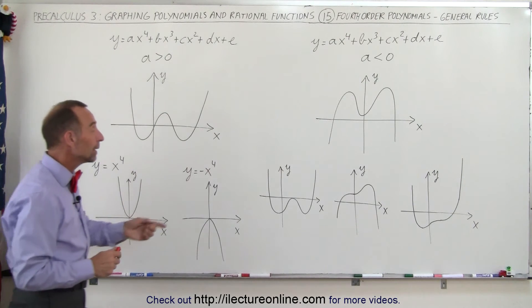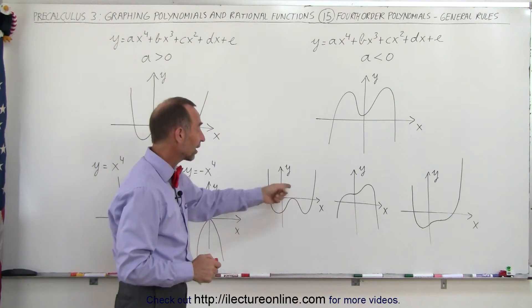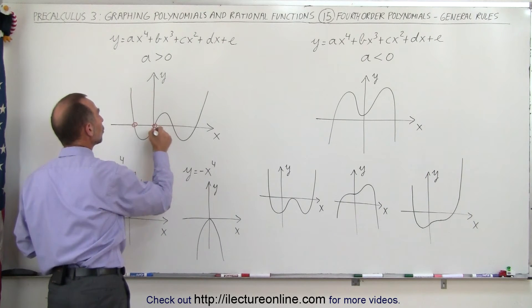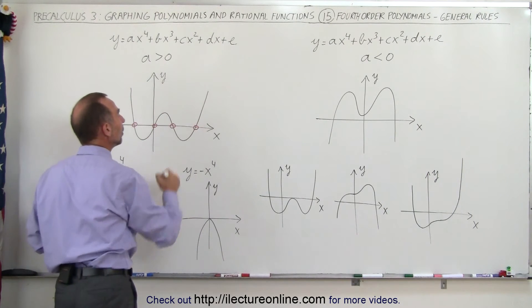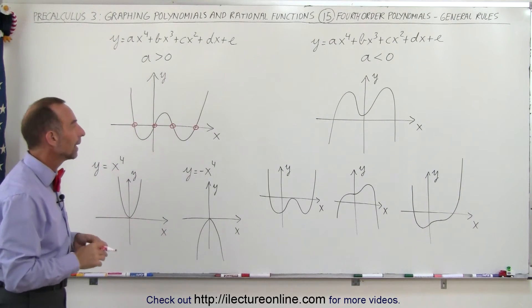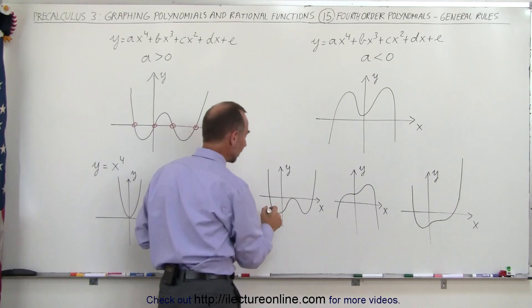Other scenarios could be here where you see that it looks like a W, but instead of having one, two, three, four roots, which is typical for a fourth-order polynomial, here you only have three roots.